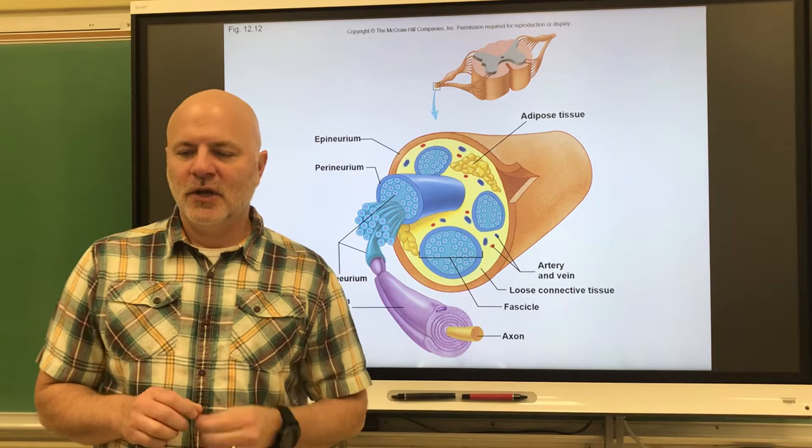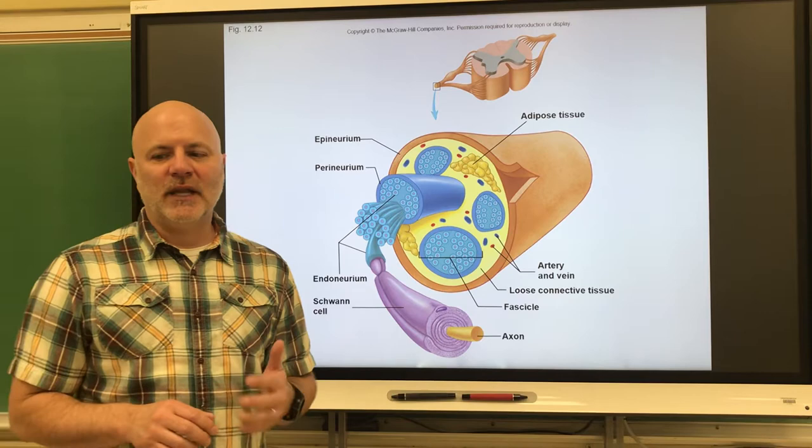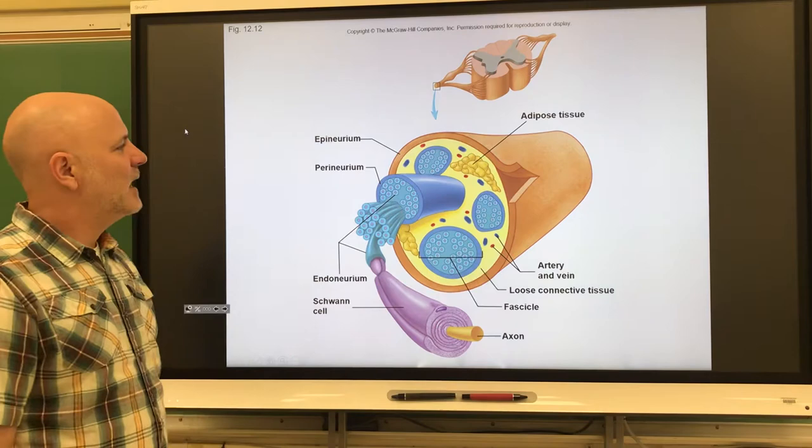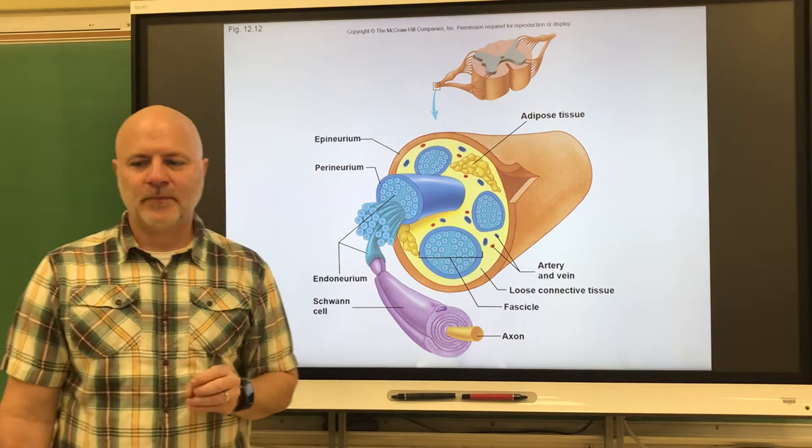A nerve is a cord-like bundle of nerve fibers held together by layers of connective tissue. A nerve fiber and axon are the same thing. We have connective tissue around the entire nerve, and that is known as the epineurium — the outermost layer of connective tissue surrounding a nerve.